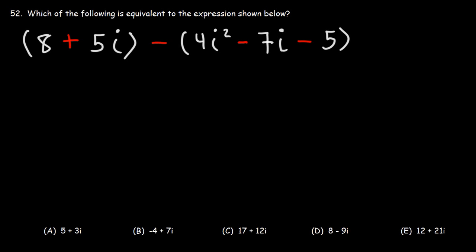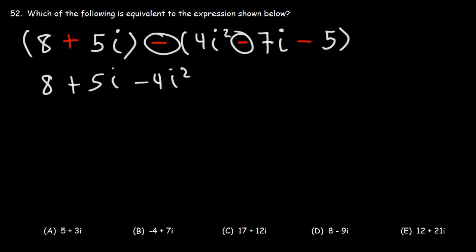Problem 52: Which of the following is equivalent to the expression shown below? We're dealing with imaginary numbers. Let's begin by distributing the negative sign. So this is 8 plus 5i minus 4i squared. The two negative signs make the next term positive, so this is going to be plus 7i and then plus 5.